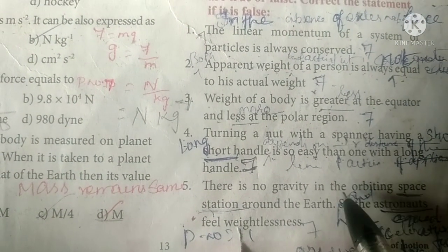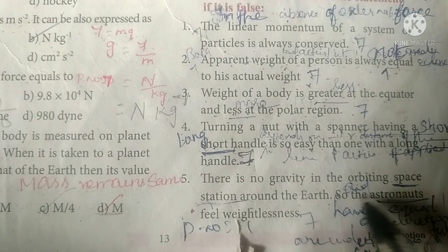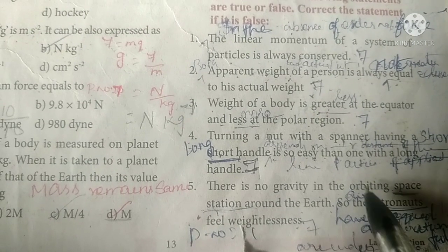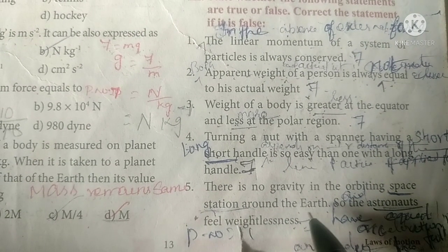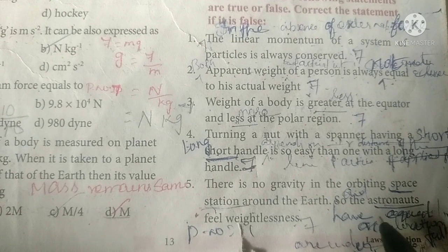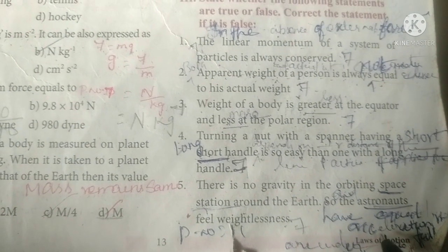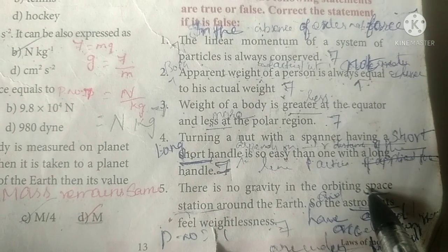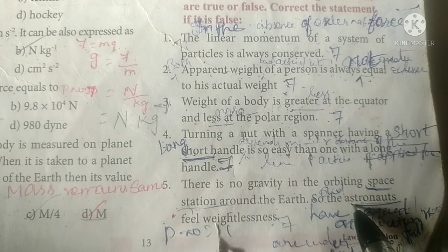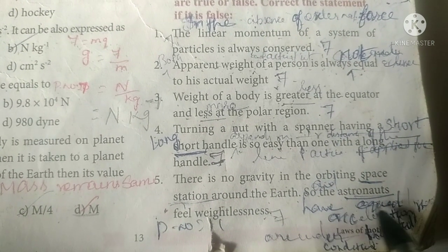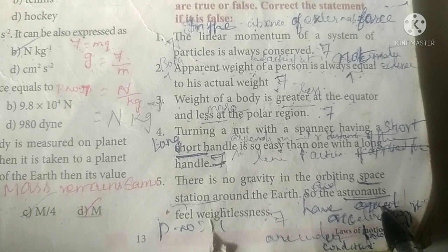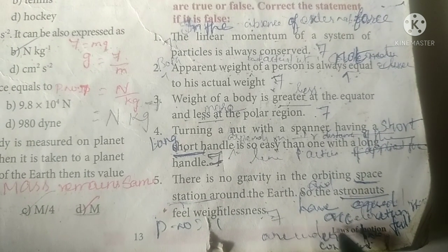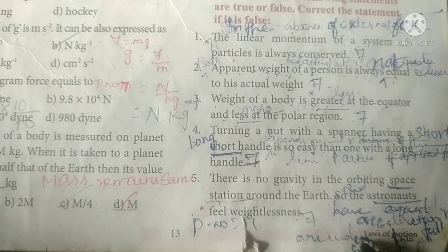Question five: there is no gravity in the orbiting space station around the Earth, so the astronauts feel weightlessness. This is false. Both the space station and the astronauts are under free-fall conditions — they have equal acceleration. Write: the space station and the astronauts have equal acceleration and are under free-fall conditions.